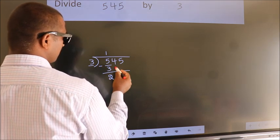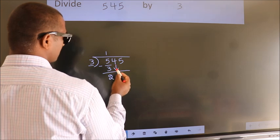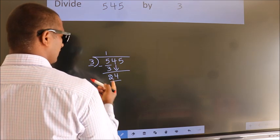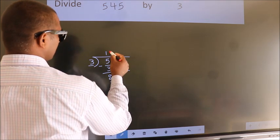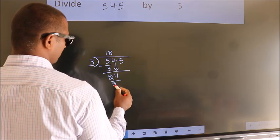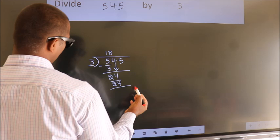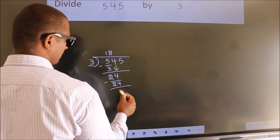After this, bring down the beside number. So 4 down, so 24. When do we get 24? In 3 table, 3 8s, 24. Now we subtract. We get 0.